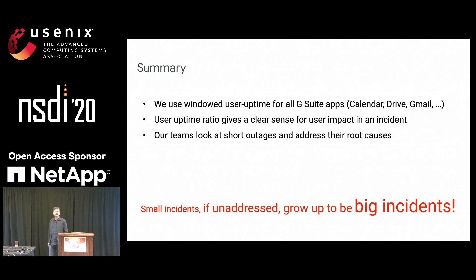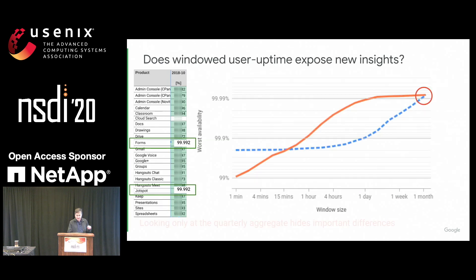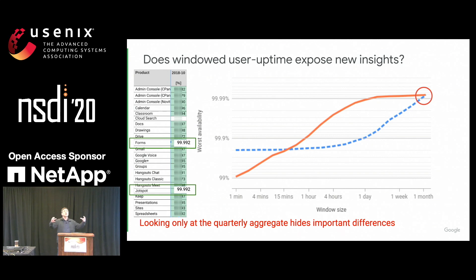Q: I have a question about your metric — meaningful availability. You're talking about availability but not reliability. Throughout your talk you were mentioning continuous downtime, but the availability metric you proposed doesn't really capture that continuity, right? A: Actually, the windowed availability does capture that. The knee of the blue curve gives you the duration of the continued episode — the window captures that. Q: So is that on top of your meaningful availability or part of it? A: It's part of it.